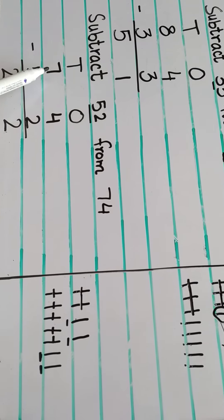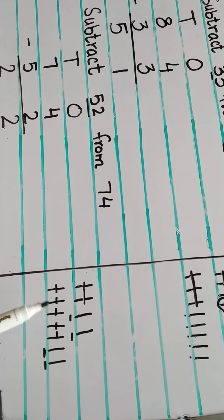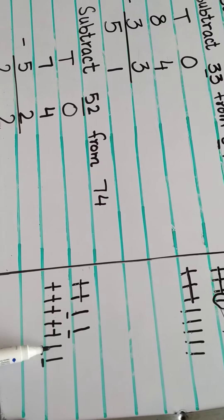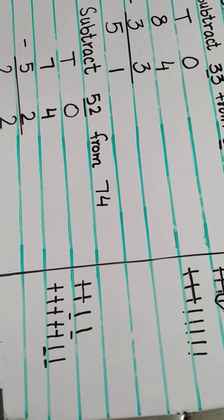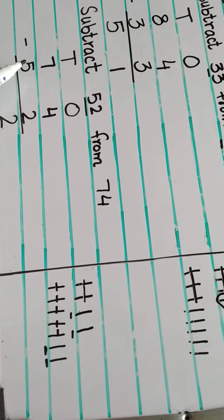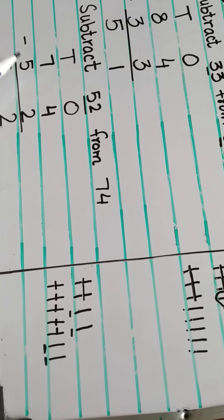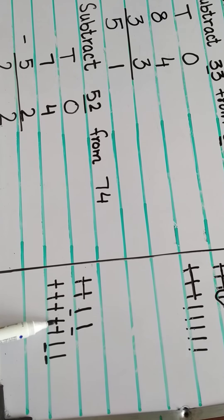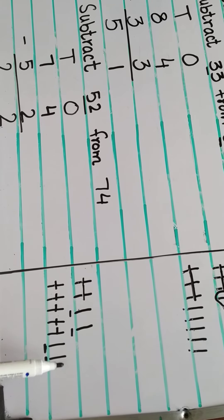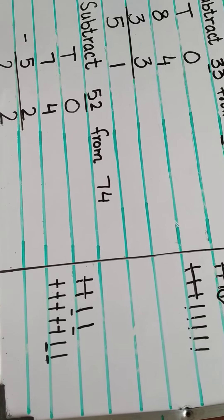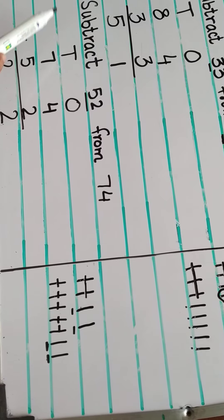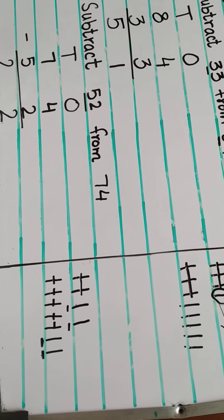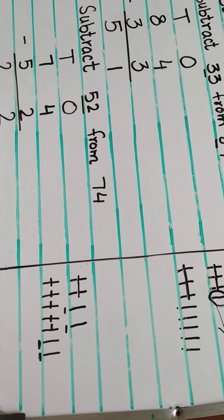And then in the tens column, the first number is 7. Draw 7 lines: 1, 2, 3, 4, 5, 6, 7. And we have to subtract 5 from 7: 1, 2, 3, 4, 5. Count the ones left: 1, 2. So when we subtract 52 from 74, the answer will be 22.